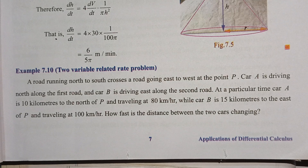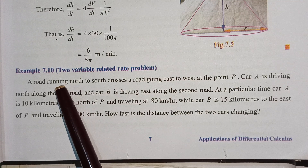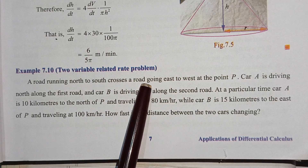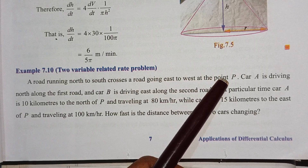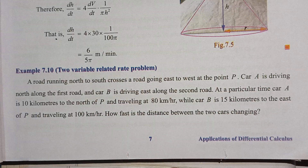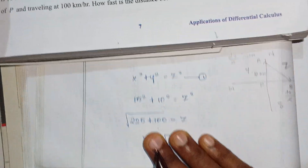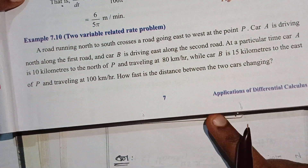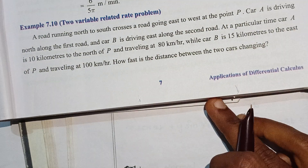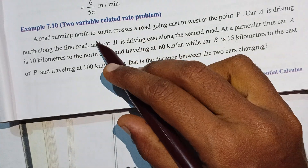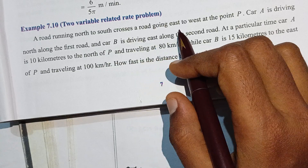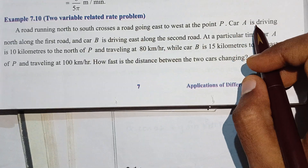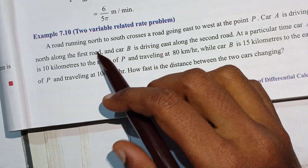Hi students, I am Veno. This is 12th Mark Chapter 7, example 7.10. The question is about a road running north to south, and a cross road going east to west. A car is driving north along the first road.